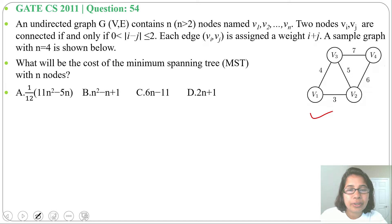What will be the cost of minimum spanning tree with n nodes? Four options are given. First understand the sample graph V1, V2. Difference is 2-1=1 < 2, so they are connected and their weight will be 1+2=3.